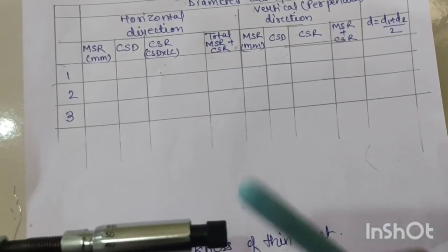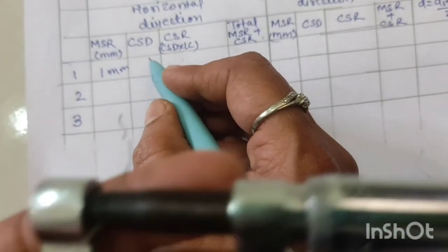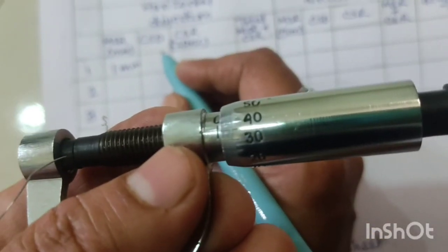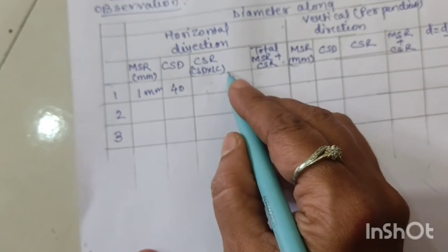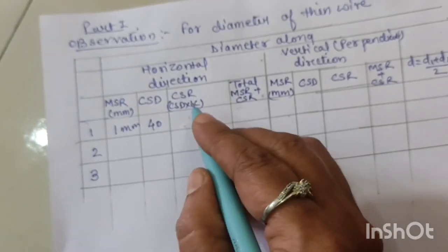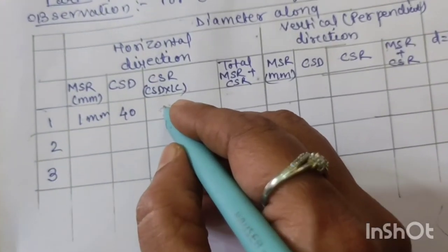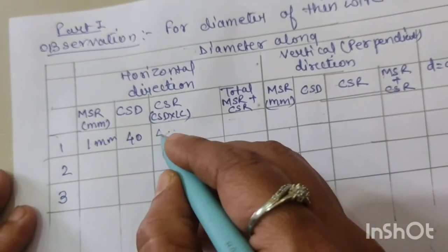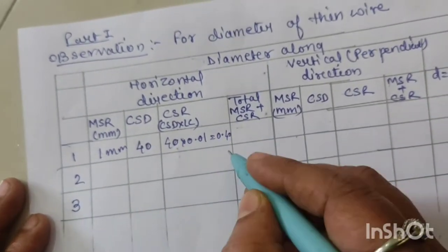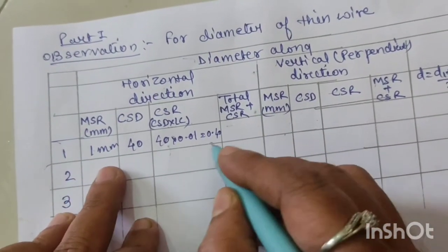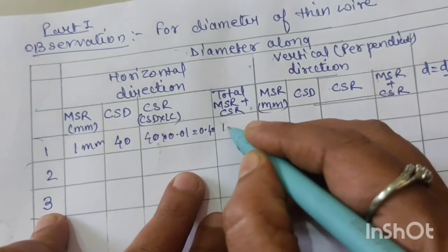So MSR is 1 mm and CSD is 40 divisions. The CSR (circular scale reading) = CSD × least count = 40 × 0.01 = 0.40 mm. Total reading = MSR + CSR = 1 + 0.40 = 1.40 mm.